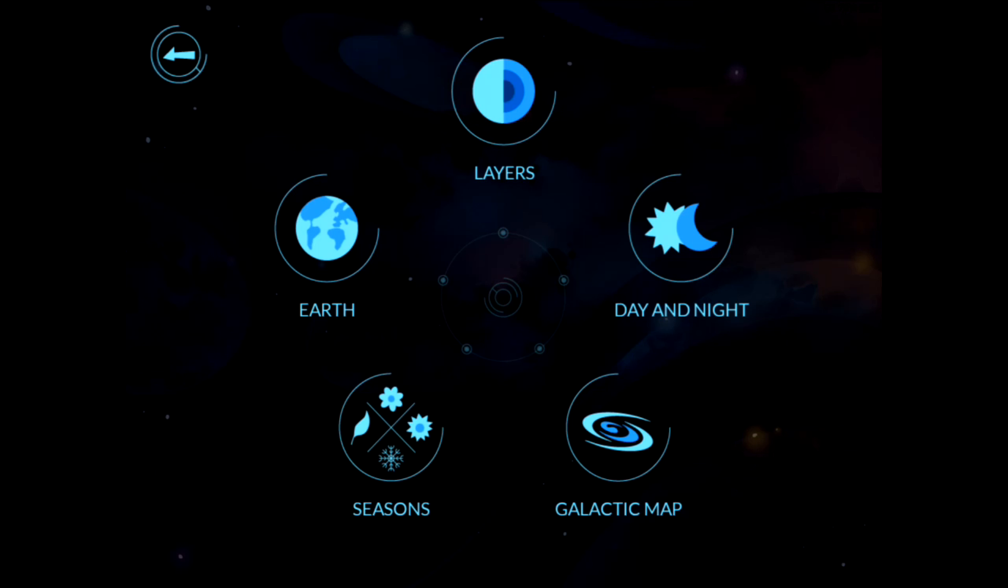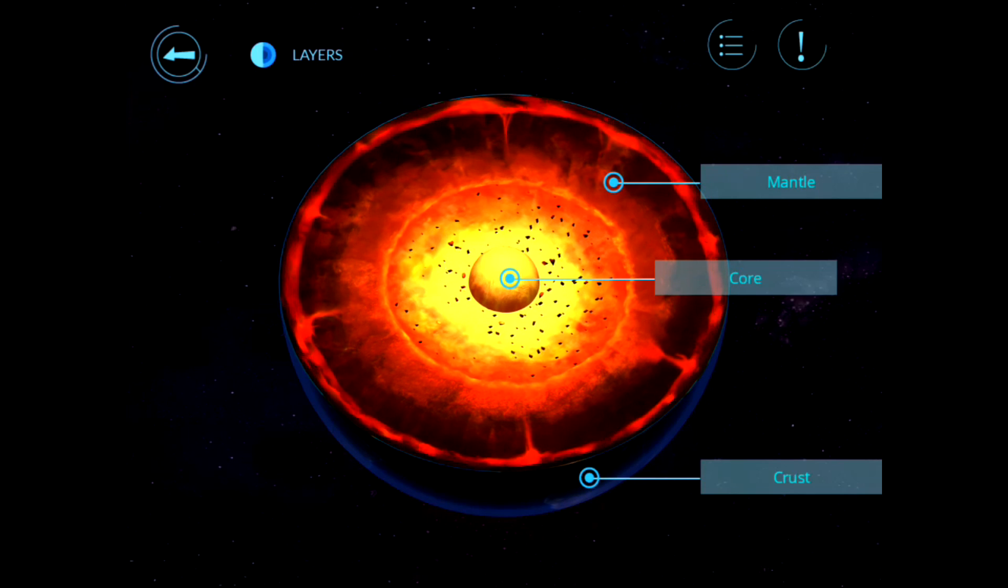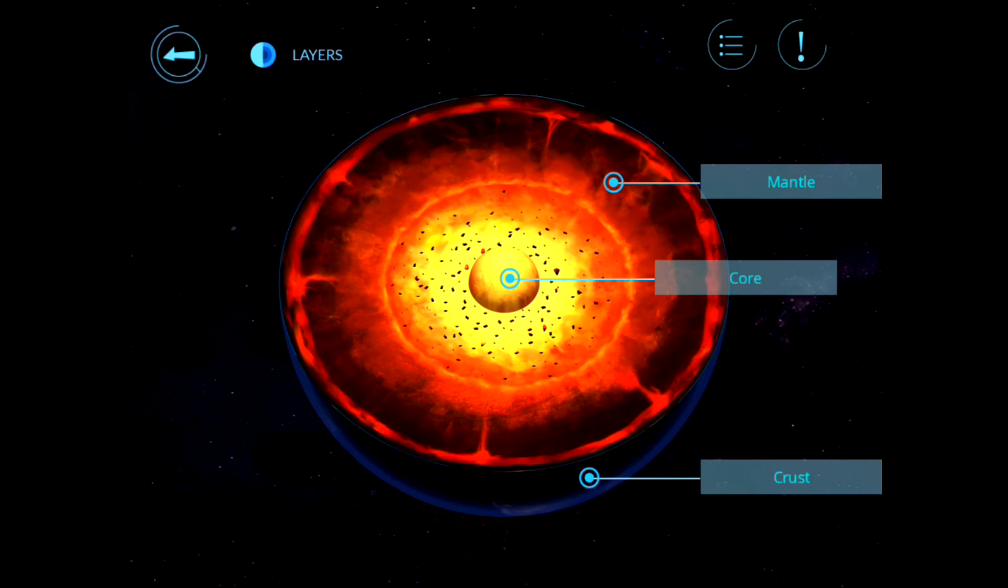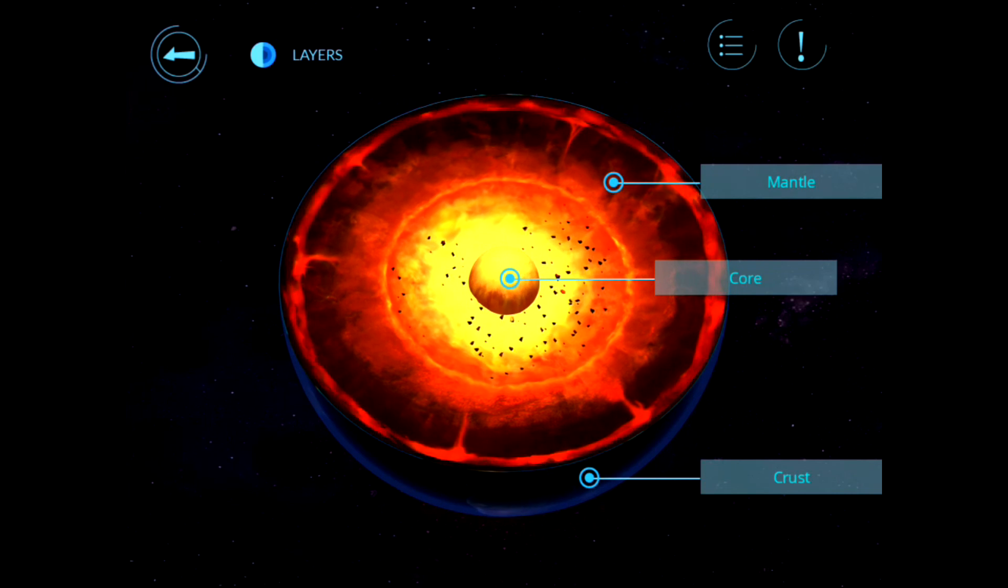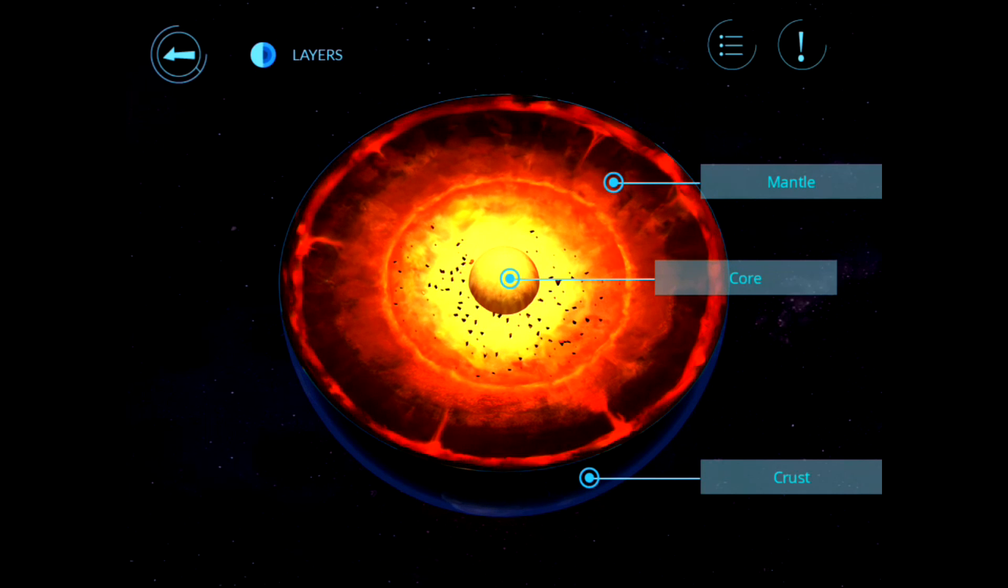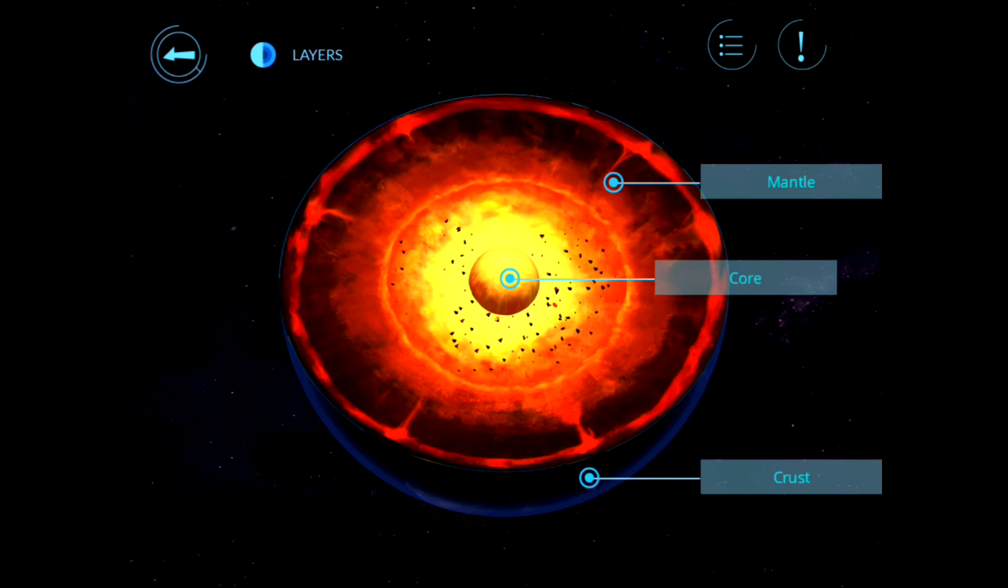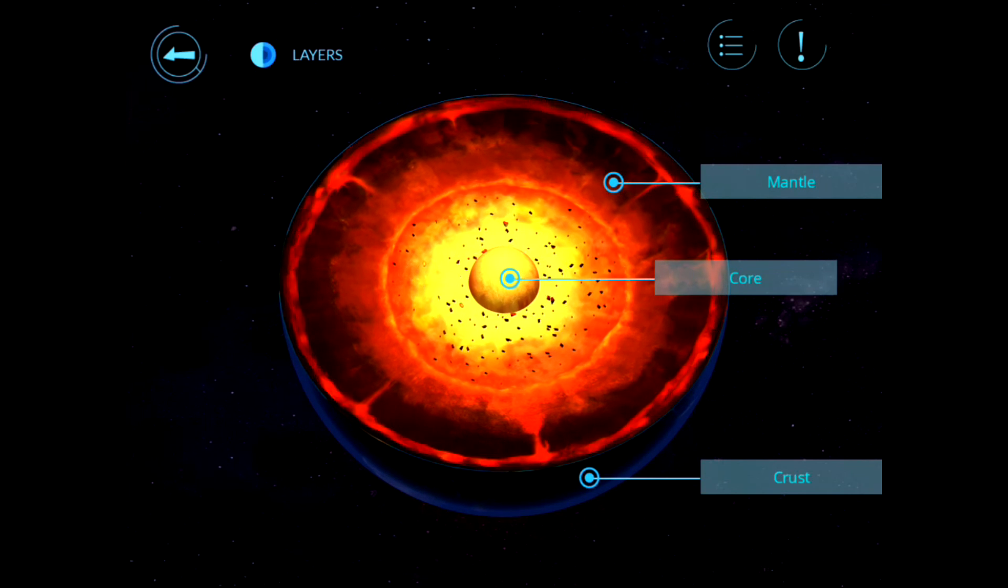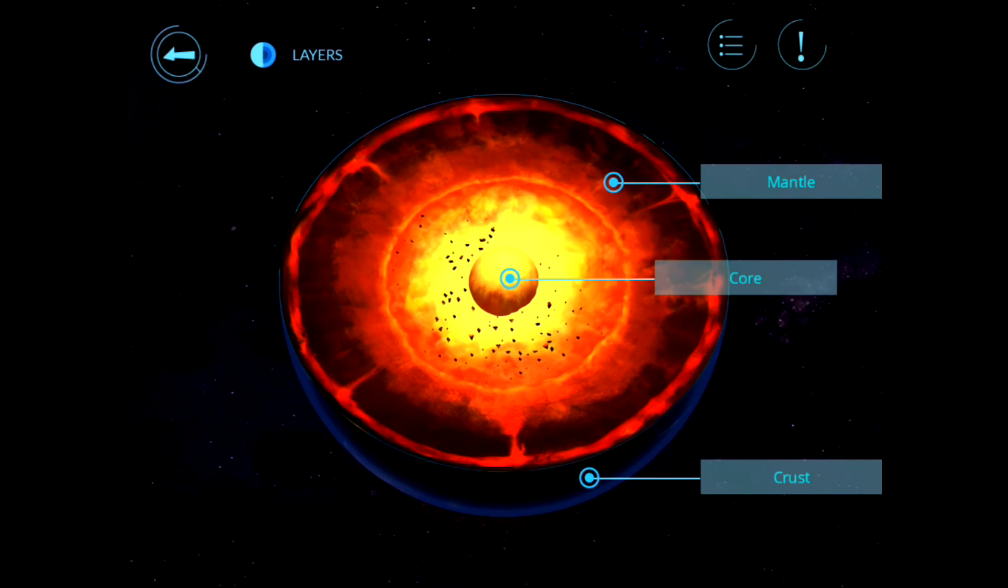So go ahead and tap on Earth. As you can see, there are a bunch of different sub-topics we can learn about. Click on the layers, and one of the things I really like about Arloon Solar System is that it uses incredible animations and graphics to teach you about different elements. You can see the mantle, the core, the crust.